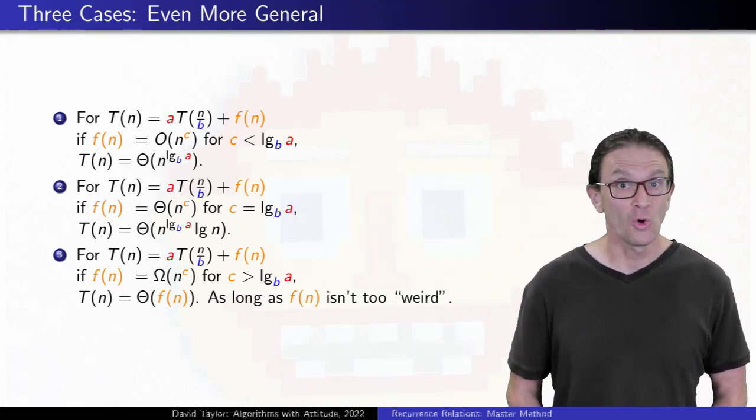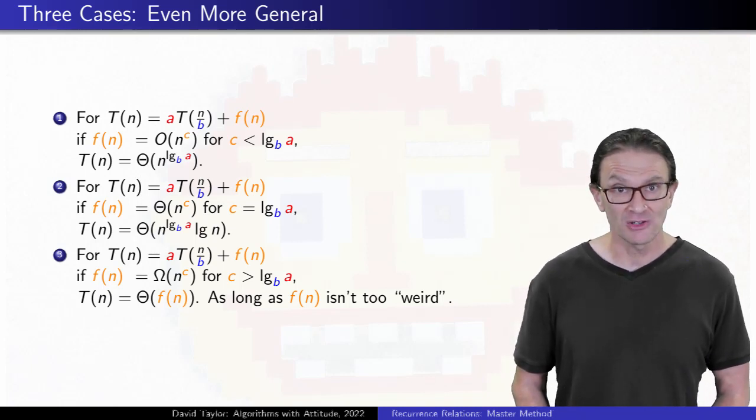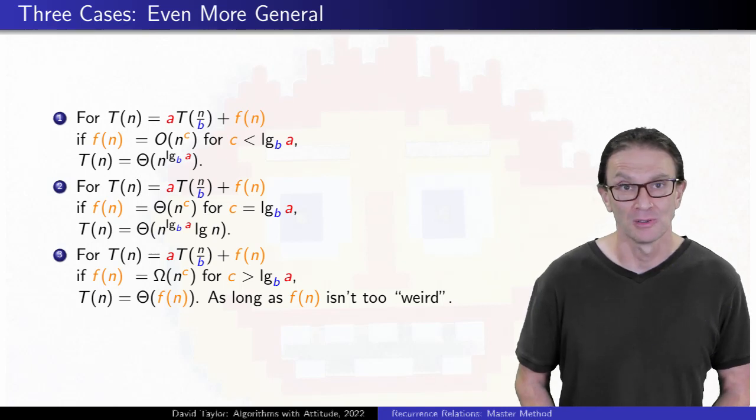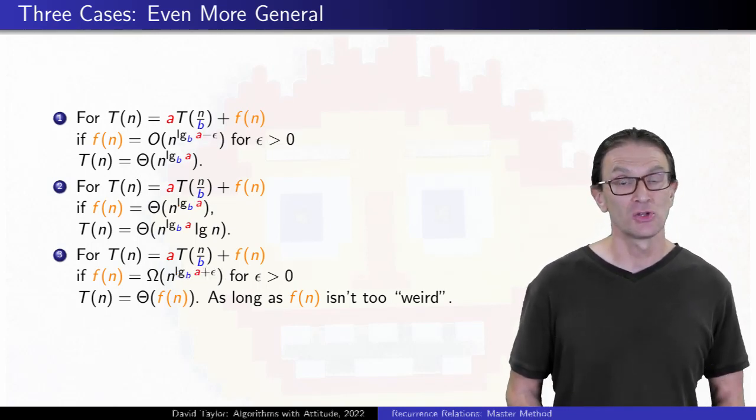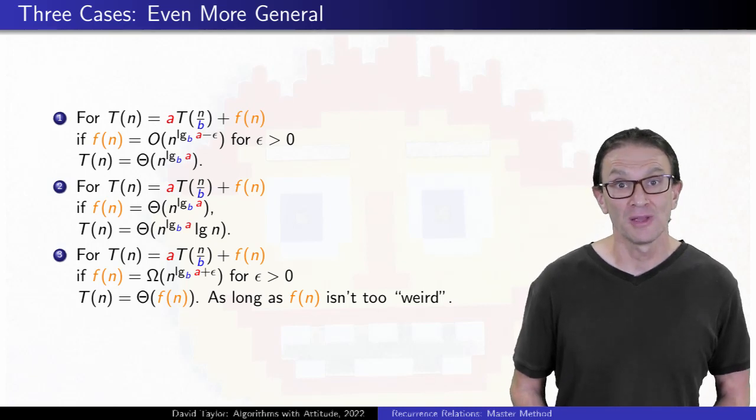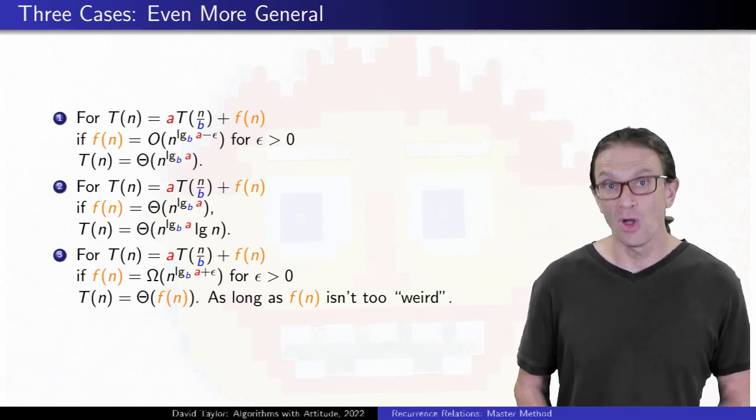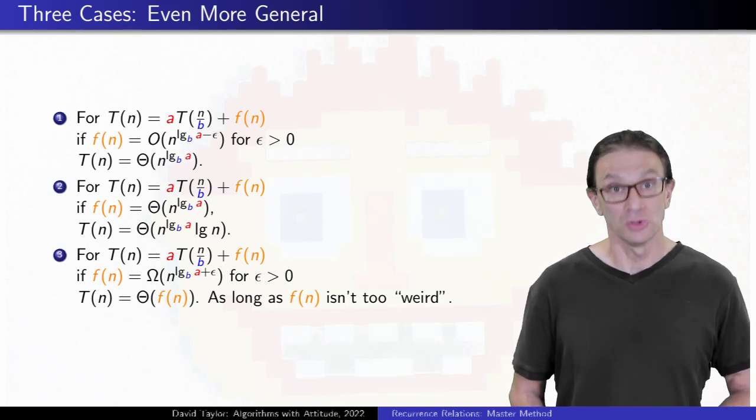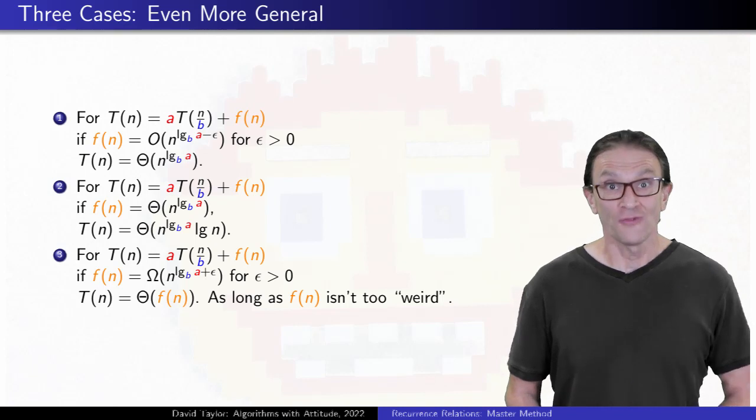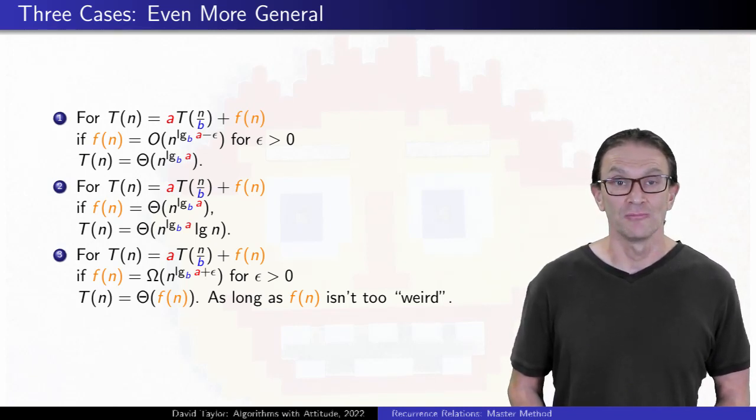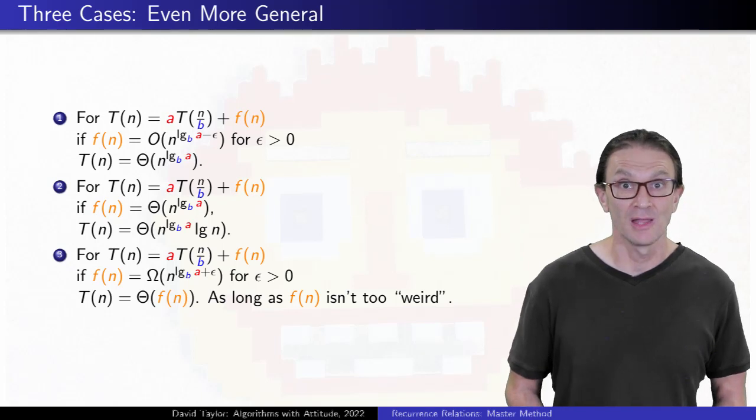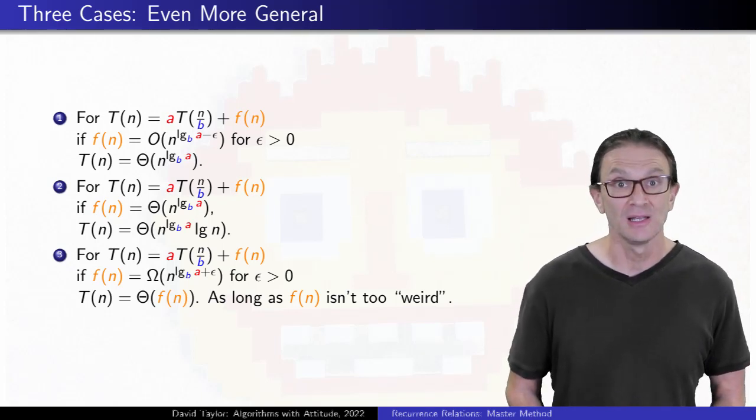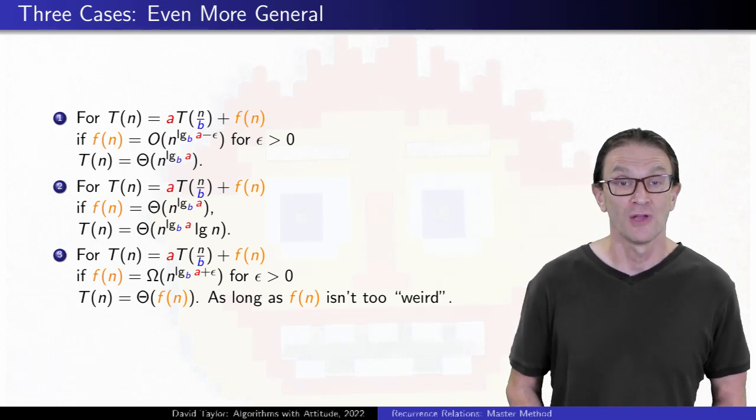Usually when we see these recurrences, we know a and b, but that function can just be some arbitrary function which may or may not be a polynomial. Manipulating our variables a little bit, we can just directly compare the function against n to the log base b of a. n to the log base b of a is called the watershed function. Roughly, the driving function is either smaller than, equal to, or larger than the watershed function. Those roughly give our three cases, and the watershed function gets its name from rain landing on different sides of a mountain peak. If it lands on one side, it goes one way, if it lands on the other side, it goes the other way, and of course if it lands exactly on the top of the peak, the rain just balances on itself and piles up.